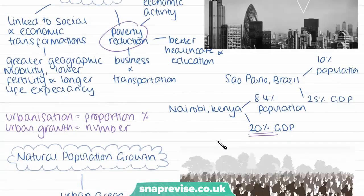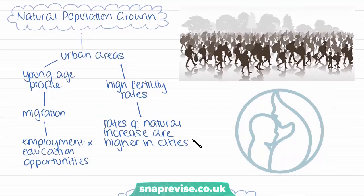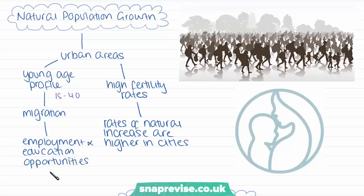Moving on, we're going to look at natural population growth as a factor causing urban growth. Urban areas tend to have very young age profiles. Across the world, it's traditionally been young adults between about 15 to 40 years old who have migrated into cities, lured by prospects such as higher paid jobs, better employment opportunities, and greater social and cultural diversity. Between 2001 and 2011, the population of large city centres in England and Wales more than doubled, with the number of residents aged 22 to 29 nearly tripling to make up almost half of the total population.